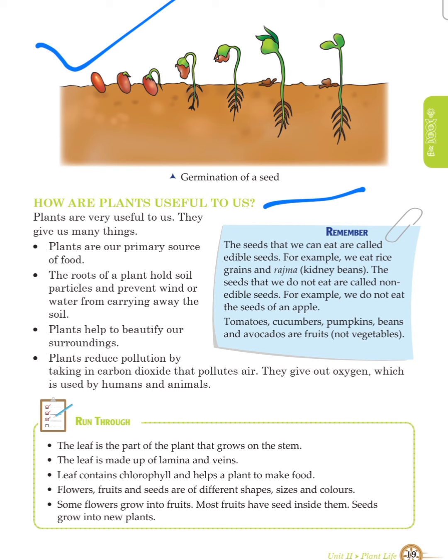Now we will see what we learned. The leaf is the part of a plant that grows on the stem. The leaf is made up of lamina and veins. Leaf contains chlorophyll and helps a plant to make food. Flowers, fruits and seeds are of different shapes, sizes and colors. Some flowers grow into fruits. Most fruits have seeds inside them. Seeds grow into a new plant.